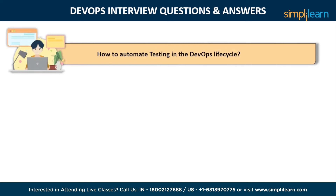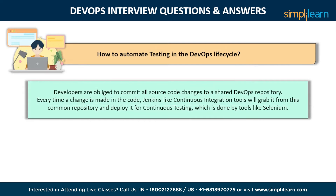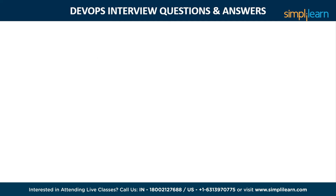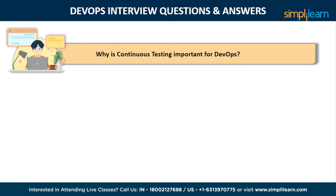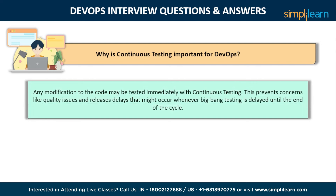The next question is: how do you automate testing in the DevOps lifecycle? Developers are obliged to commit all source code changes to a shared DevOps repository. Every time a change is made in the code, continuous integration tools like Jenkins will grab it from this common repository and deploy it for continuous testing, which is done by tools like Selenium. Any modification to the code can be tested immediately with continuous testing, preventing quality issues and release delays that might occur when big-bang testing is delayed until the end of the cycle. This allows for high quality and more frequent releases.